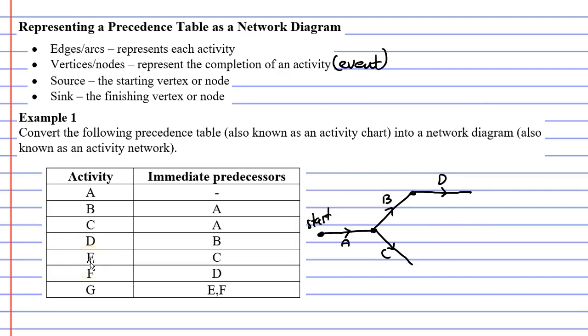Next we have activity E, which comes after activity C. So now I can complete activity C so that I can carry on with activity E. You might notice that both activities D and E have not been completed yet, and I do have a reason for doing this.